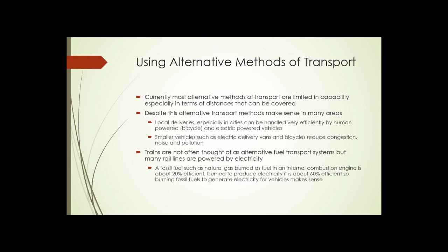Using alternative methods of transport is good, but currently most alternative methods are limited in capability — especially in terms of distances or the speed with which those distances can be covered. Despite that, alternative transport methods do make sense in many areas. Local deliveries, especially in cities, can be handled very efficiently — sometimes more efficiently — by human-powered vehicles like bicycles or electric-powered vehicles. Smaller vehicles such as electric delivery vans and bicycles help reduce congestion, noise, and pollution in highly urban areas.